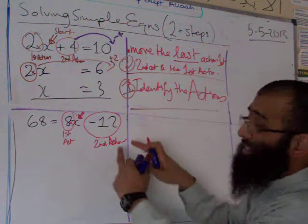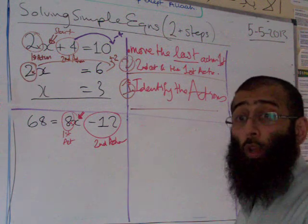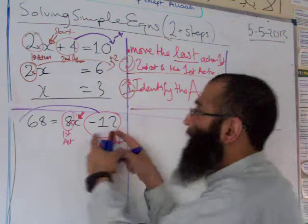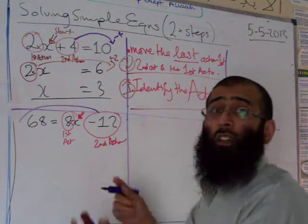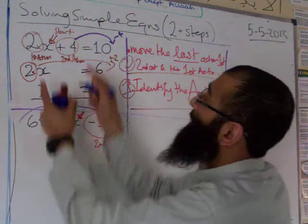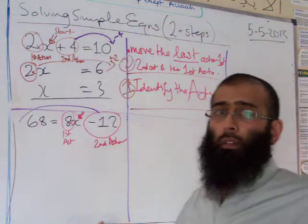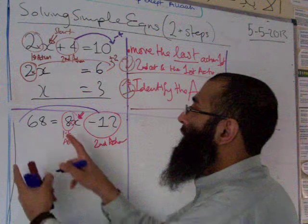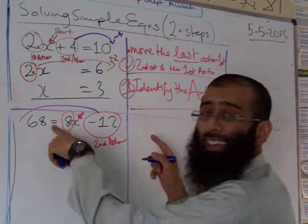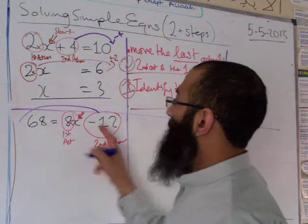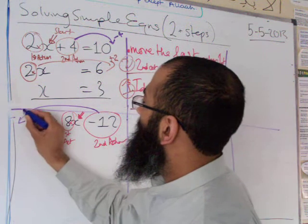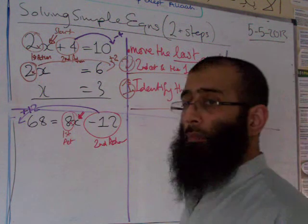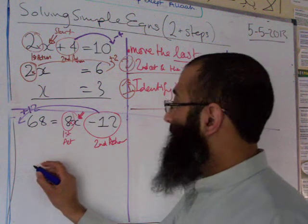Move the last action first. The second action is minus 12, so it moves from the right side to the left side — it must change sides. The opposite of minus 12 is add 12. So 68 add 12 gives us 80.